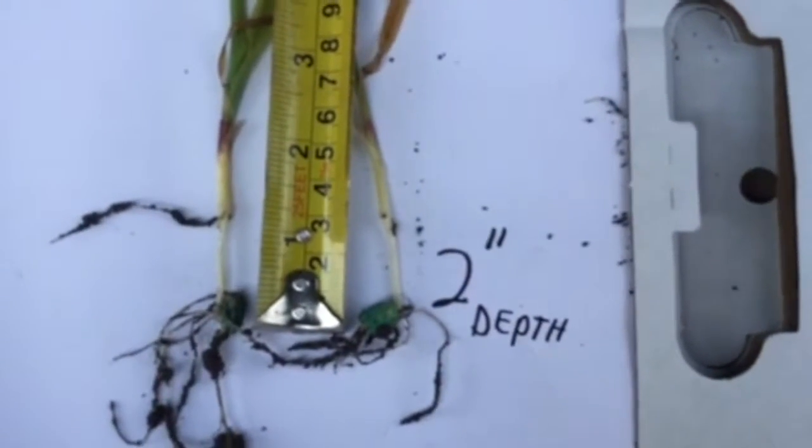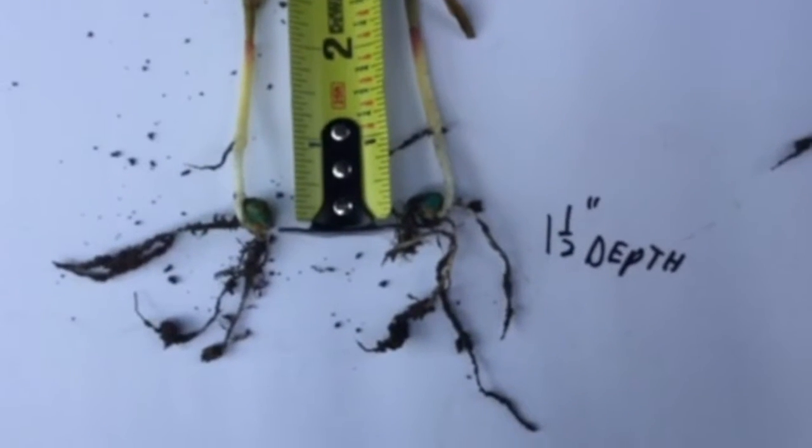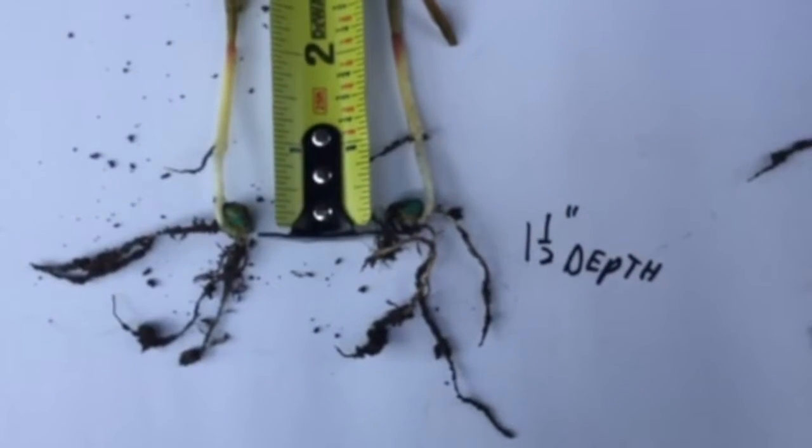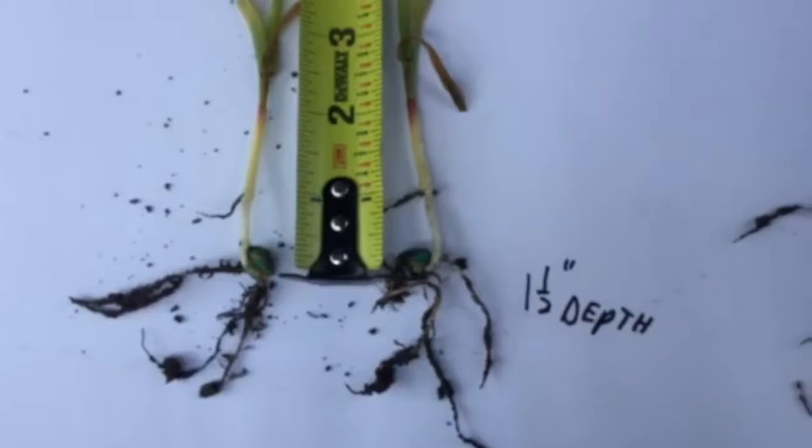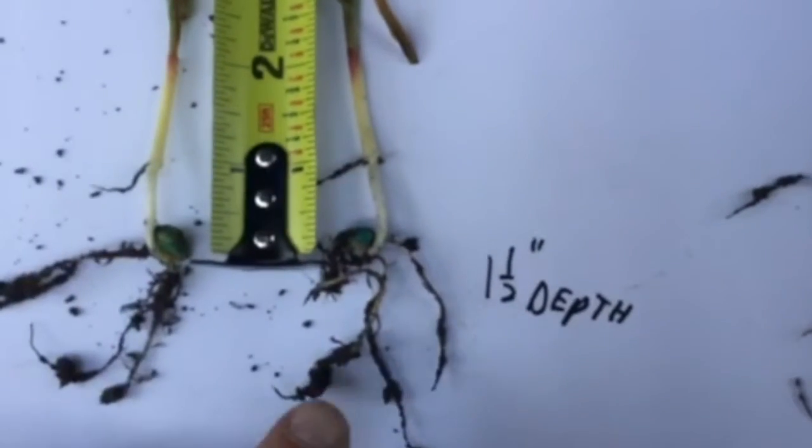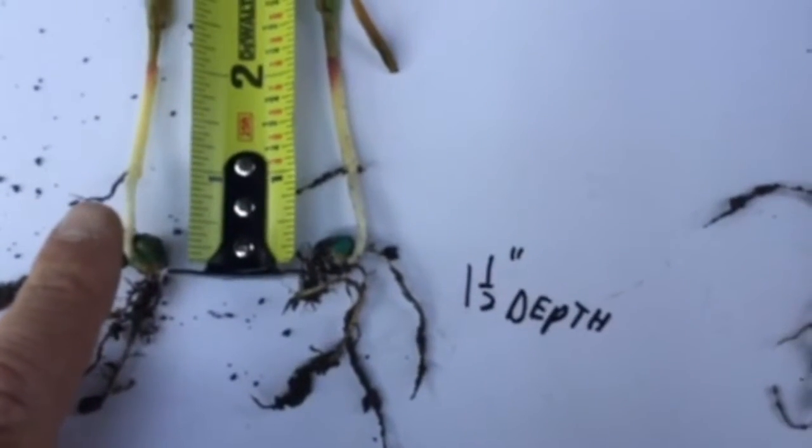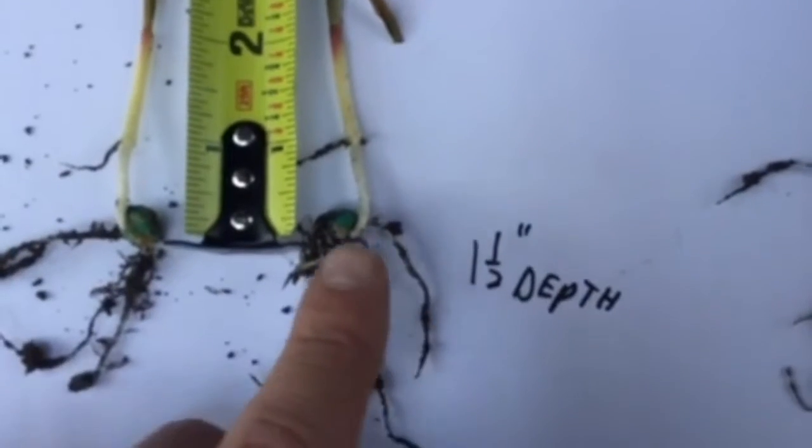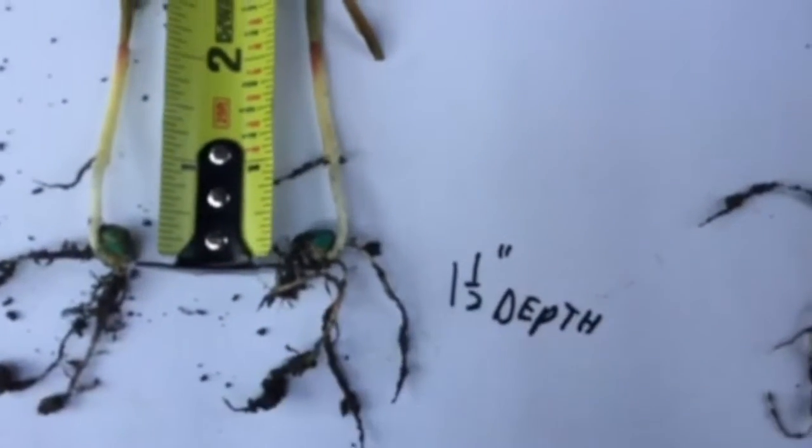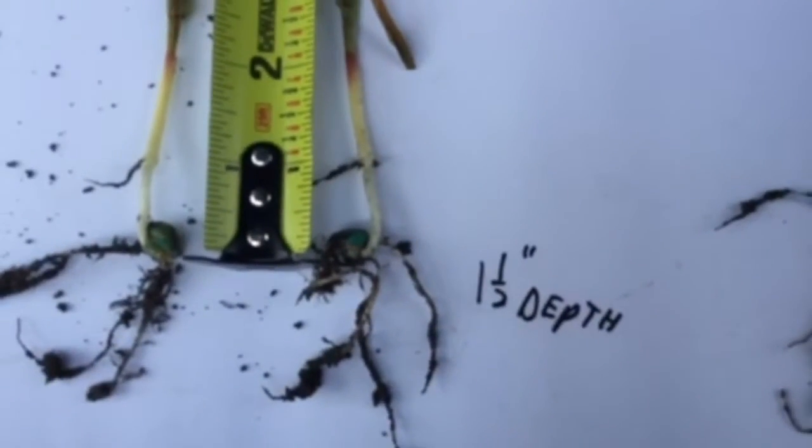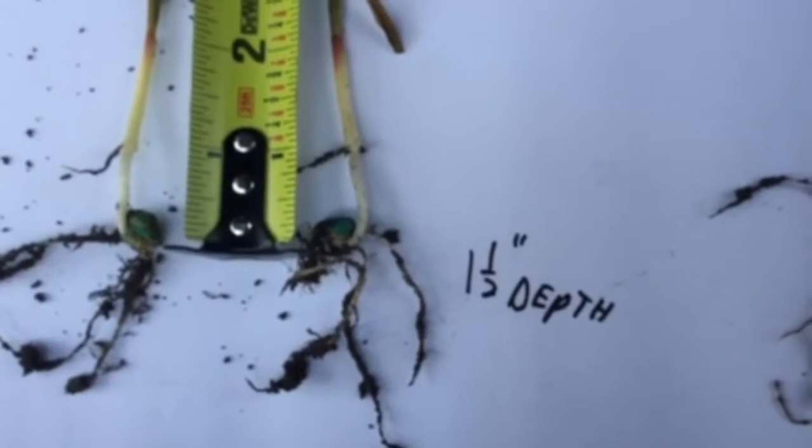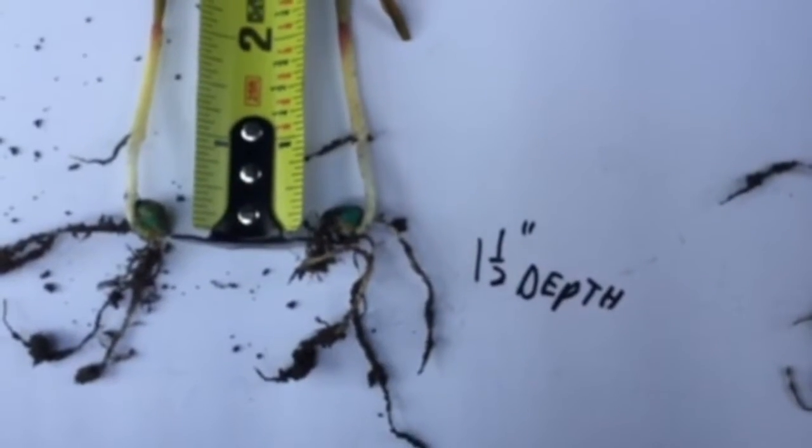Very simple way to take your planting depth. If we move over here, you can see an inch and a half planting depth. Again, same type of scenario. You take a look at your first nodal root coming out there, another one coming out on this side. You measure the distance from the seed up to that first nodal root and add three-quarter of an inch.